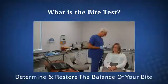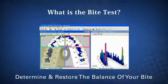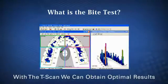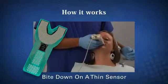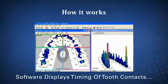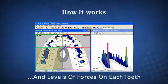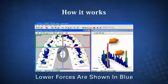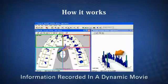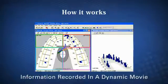It will give us the information we need to easily determine and restore the perfect balance of your bite. When our office performs an evaluation using the T-Scan system, we can obtain optimal results. It works by simply biting down on a thin sensor and the software will do the rest. It will display the timing of tooth contacts and levels of forces on each tooth. Higher forces are indicated in red and pink and lower forces are shown in blue. The information is all recorded in a dynamic movie that we can then look at closely.